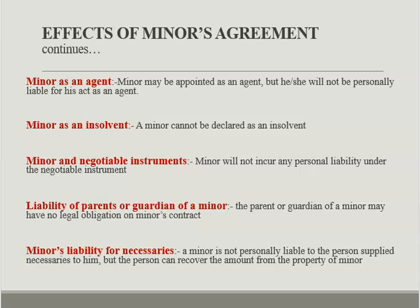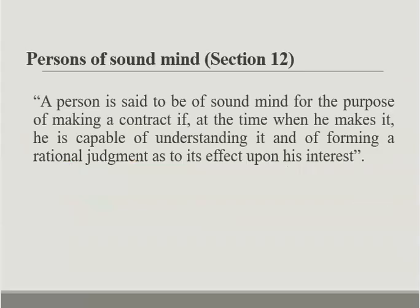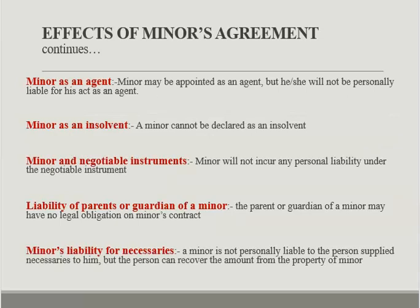Regarding liability of parents or guardian of a minor: a minor's contracts do not impose any liability on his parents or guardian, even if the contracts are for the necessities of life of a minor. Regarding a minor's liability for necessaries: a minor is not personally liable to a person who supplies necessaries to him, but that person can recover the amount from the property of the minor.